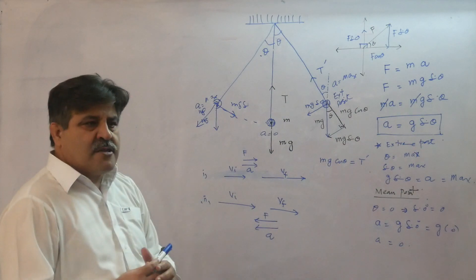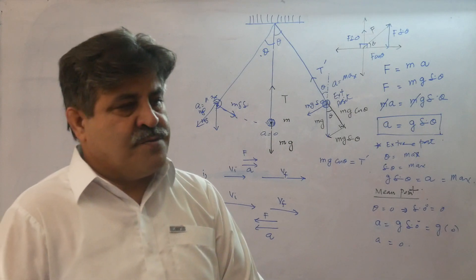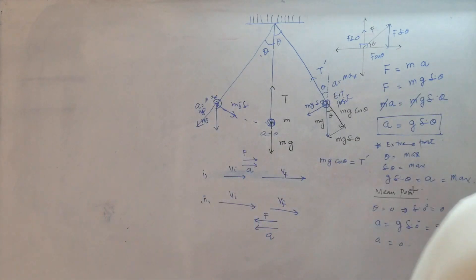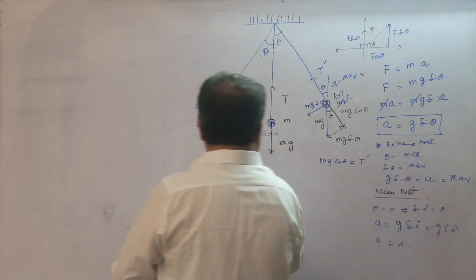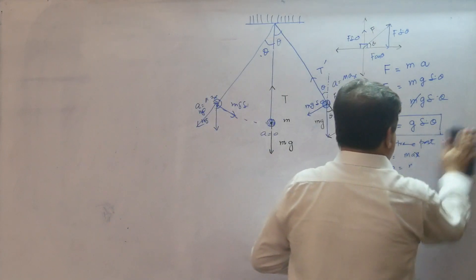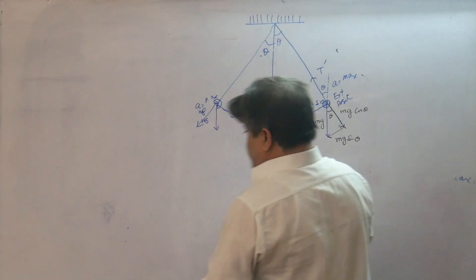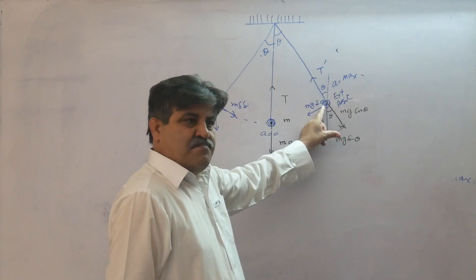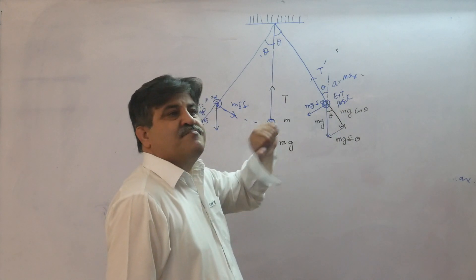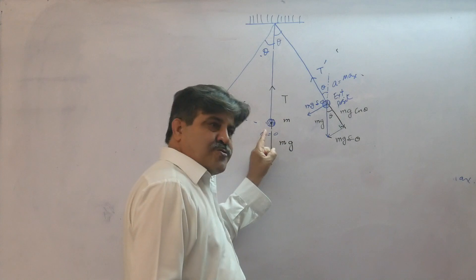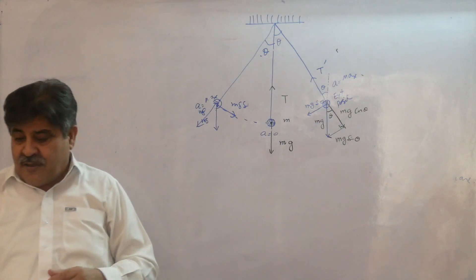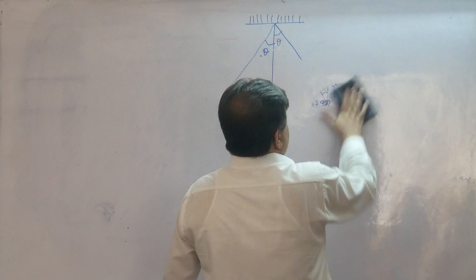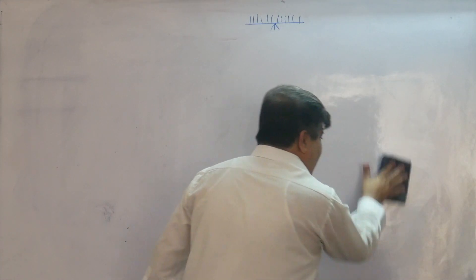We can conclude that the motion of a simple pendulum is simple harmonic motion. Here comes a very vital point - there is a confusion among students about how acceleration is maximum but velocity is zero at the extreme, while acceleration is zero but velocity is maximum at the mean position. Students do not understand this idea completely.